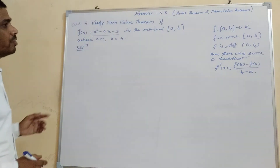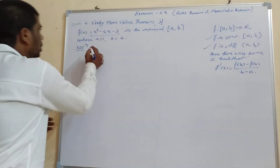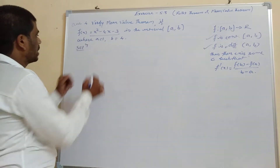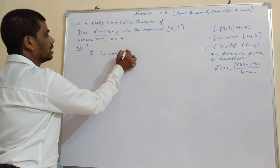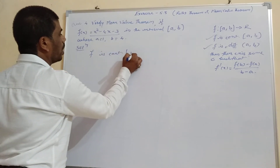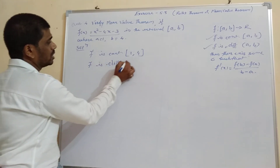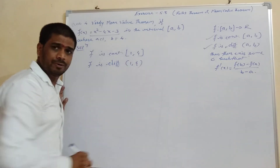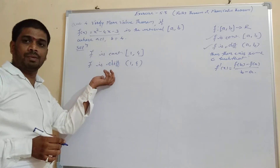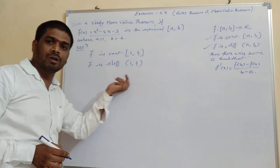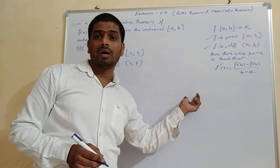So here we require that f should be continuous and f should be differentiable. Since f is a polynomial, we can write that f is continuous in the closed interval 1 to 4 and f is differentiable in the open interval 1 to 4, because every polynomial function is continuous in each real interval.